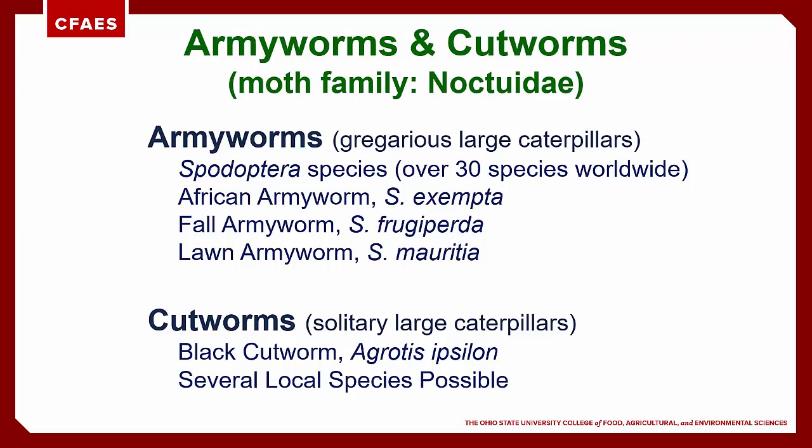Cutworms are large caterpillars that tend to feed as individuals. Larger cutworms will often eat a smaller cutworm if they encounter each other. The black cutworm has been distributed around the world and is a common vegetable pest as well as a pest of turf grasses. Other species of cutworms can occasionally cause problems in turf grass.